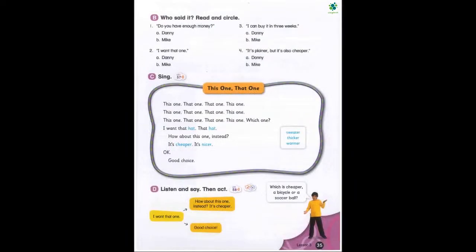Page 35 C. Sing. This one, that one, this one, that one. Which one? I want that hat, that hat. How about this one instead? I want that hat, that hat. How about this one instead? It's cheaper. It's nicer. Okay, good choice.